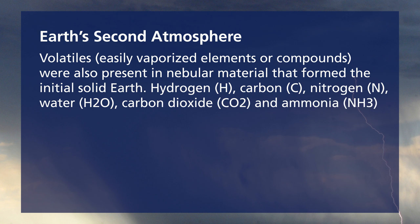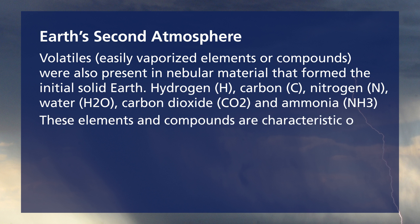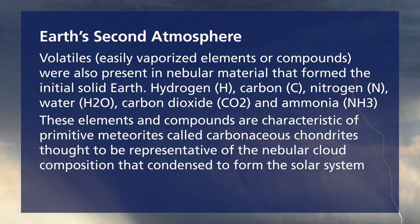Volatiles are easily vaporized elements or compounds from the initial solid Earth. These volatile compounds include hydrogen, carbon, and nitrogen, and also compounds formed from these elements such as water, carbon dioxide, and ammonia. These elements and compounds are characteristic of primitive meteorites called carbonaceous chondrites, which are thought to be representative of the nebular cloud composition that condensed to form the solar system. Therefore, materials in the early solid Earth that contained volatile components could have contributed to the formation of Earth's atmosphere.